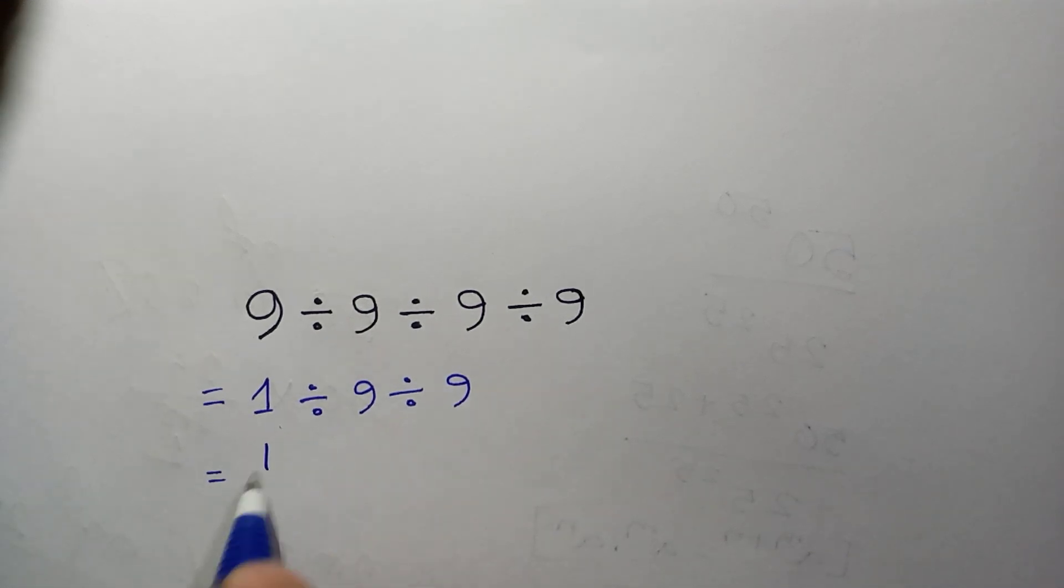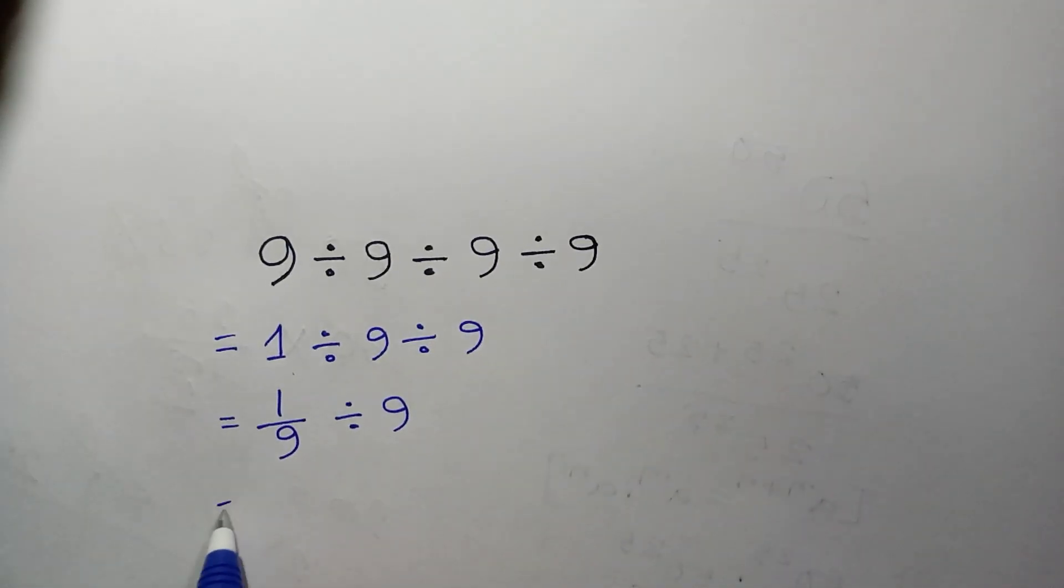Which is 1 over 9 divided by this 9. And now we think 9 divided by, here the numerator is 1.